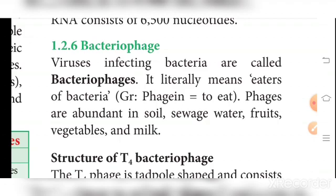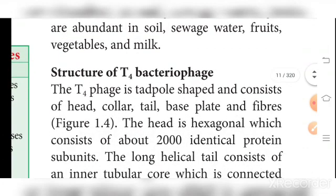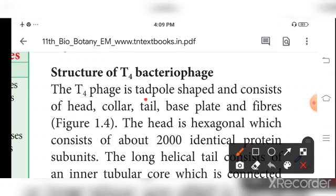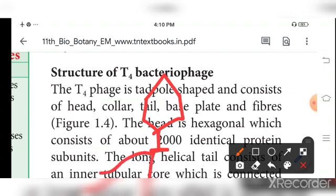In the virus, it will replicate and multiply. In the bacteriophage, it will have a head. It will also have a collar, and the collar will have a protein. It will have a base plate. In the base plate, you will have a tail fiber. In the base plate, you will also have pins or spikes.